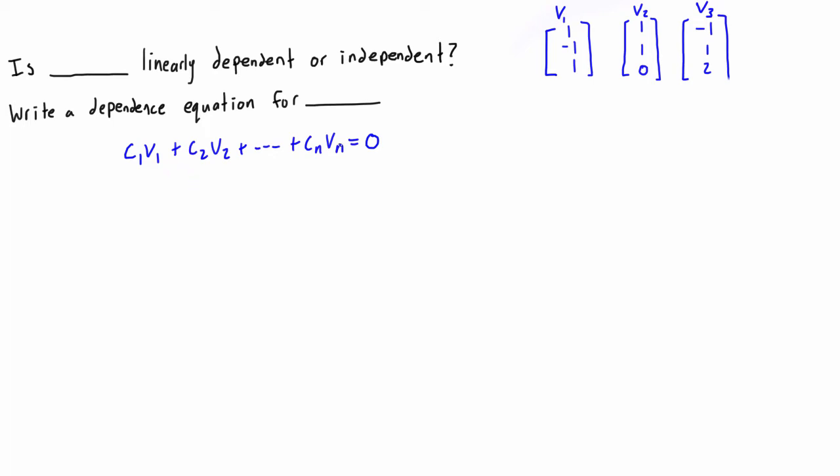So the way that we solve for this, or the easiest way to determine this, is to take all the vectors that we have and set those as the columns in an augmented matrix on the left-hand side. So that would be one, negative one, and one, and then we get one, one, zero, and then negative one, one, two. And then on the right-hand side just set all of these equal to zeros.